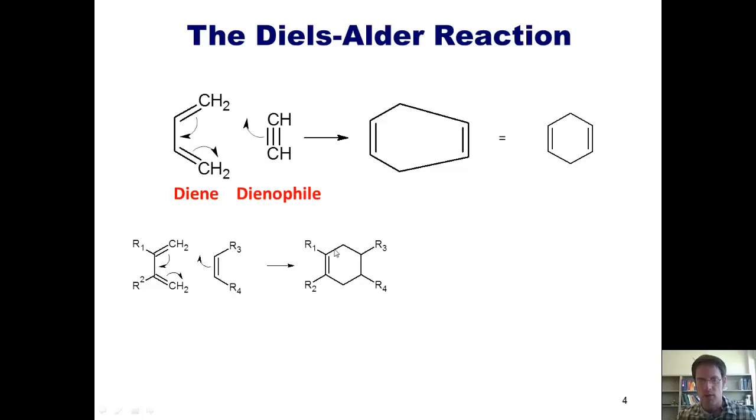Alternatively, if we use a diene and a dienophile whose pi electrons are already pre-embedded in cyclic molecules, as in this example, then after the Diels-Alder reaction occurs, we can get a polycyclic product.